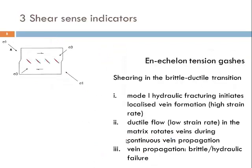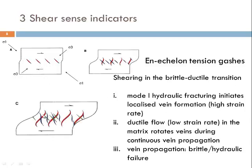Summarizing en échelon tension gashes: shearing occurs at the brittle-ductile transition and initiates with mode 1 hydraulic fracturing in localized vein formation. The fracturing process can be very rapid — as soon as fluid pressure exceeds the shear strength of the rock, such veins may form in seconds or milliseconds, making this a high strain rate process. The ductile flow in the background, which allows subsequent rotation of the tension gashes, is a low strain rate but continuous process. Propagation of tension gashes depends on accumulation of fluid pressure and may be a periodic high strain rate process, while the continuous bending of en échelon tension gashes indicates a low strain rate ductile background process.